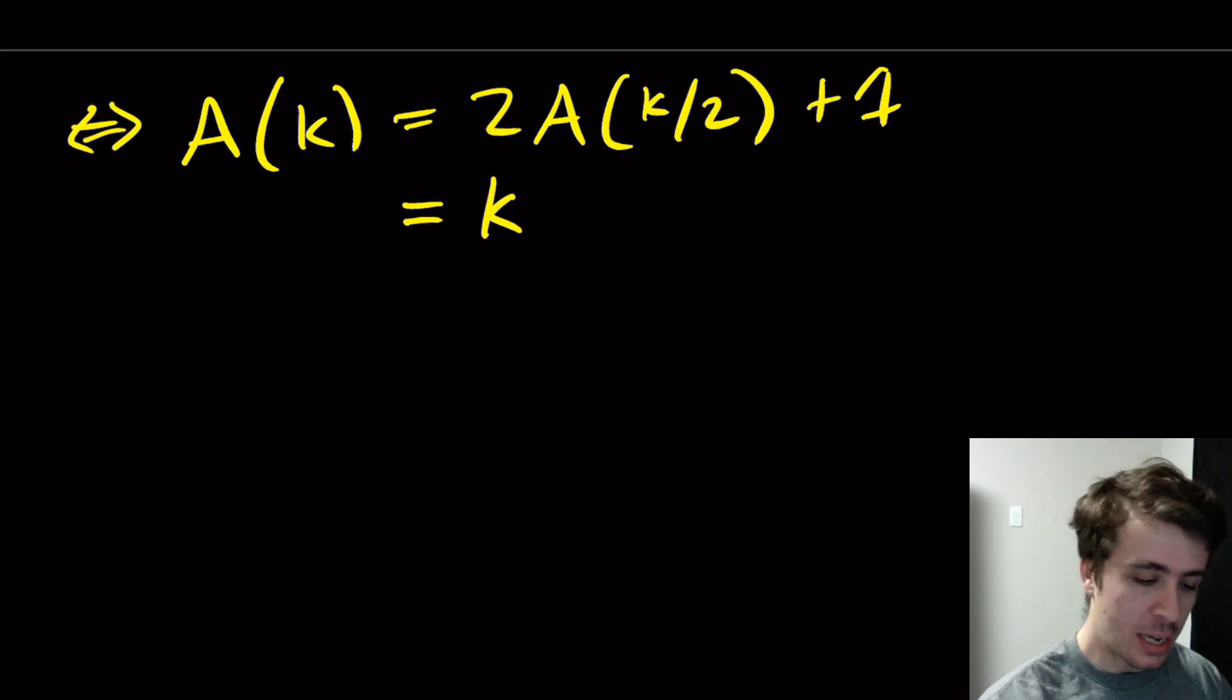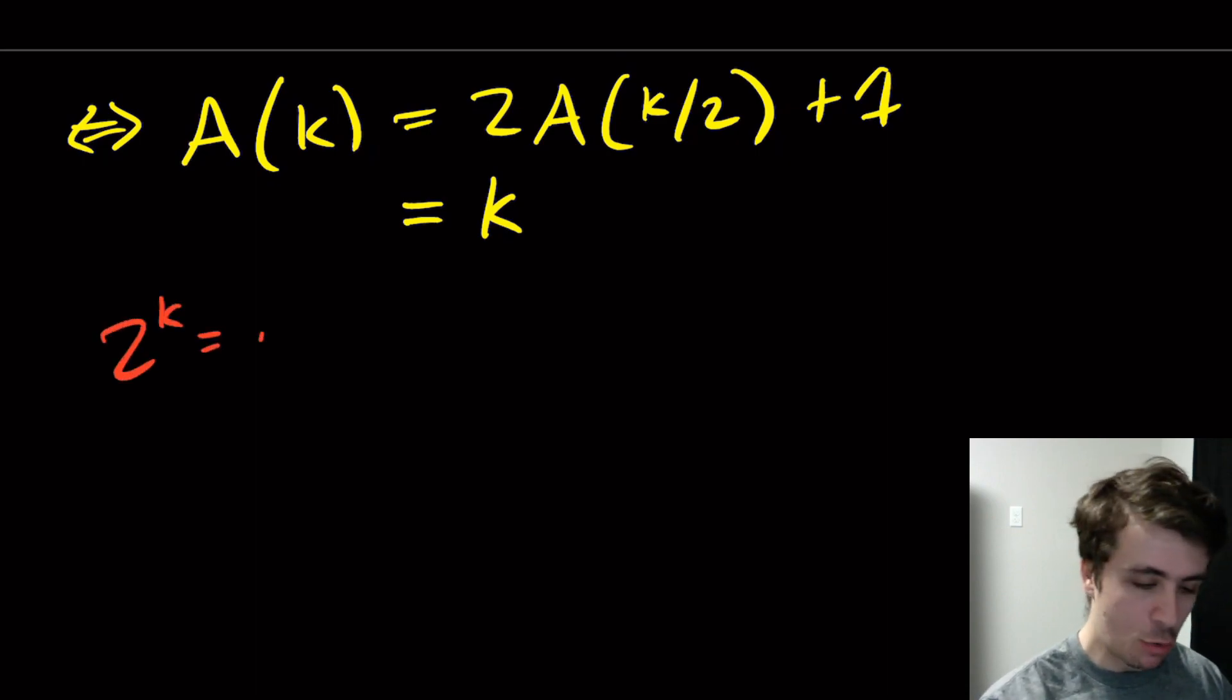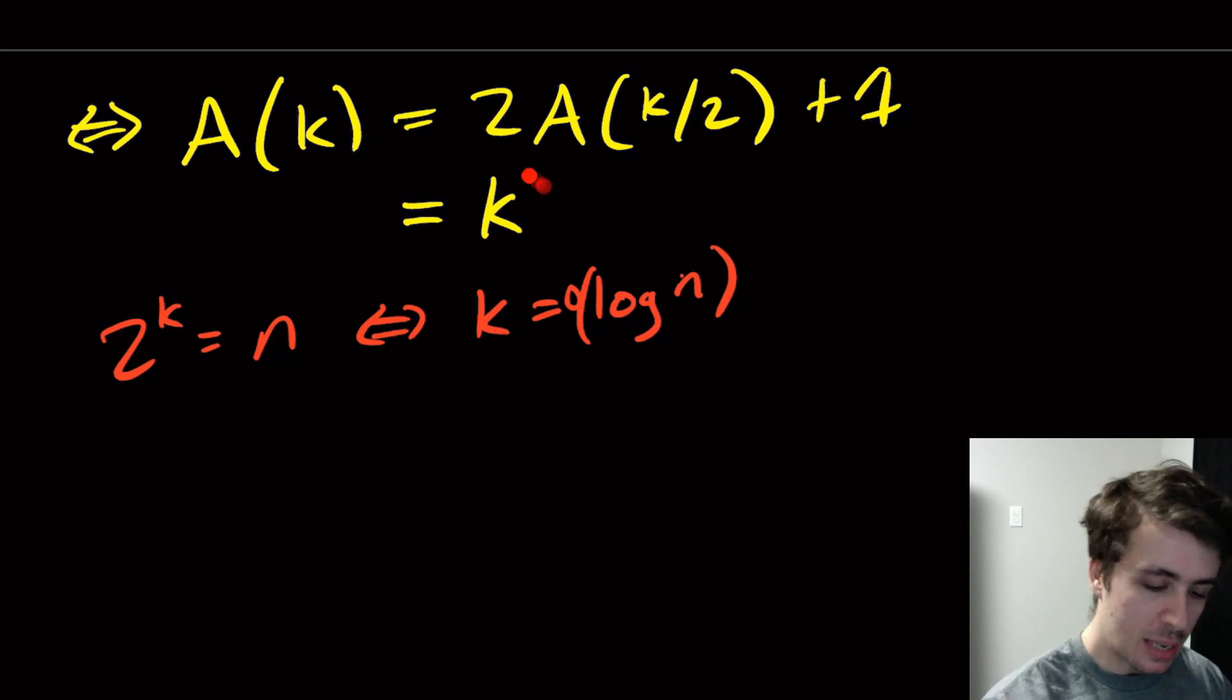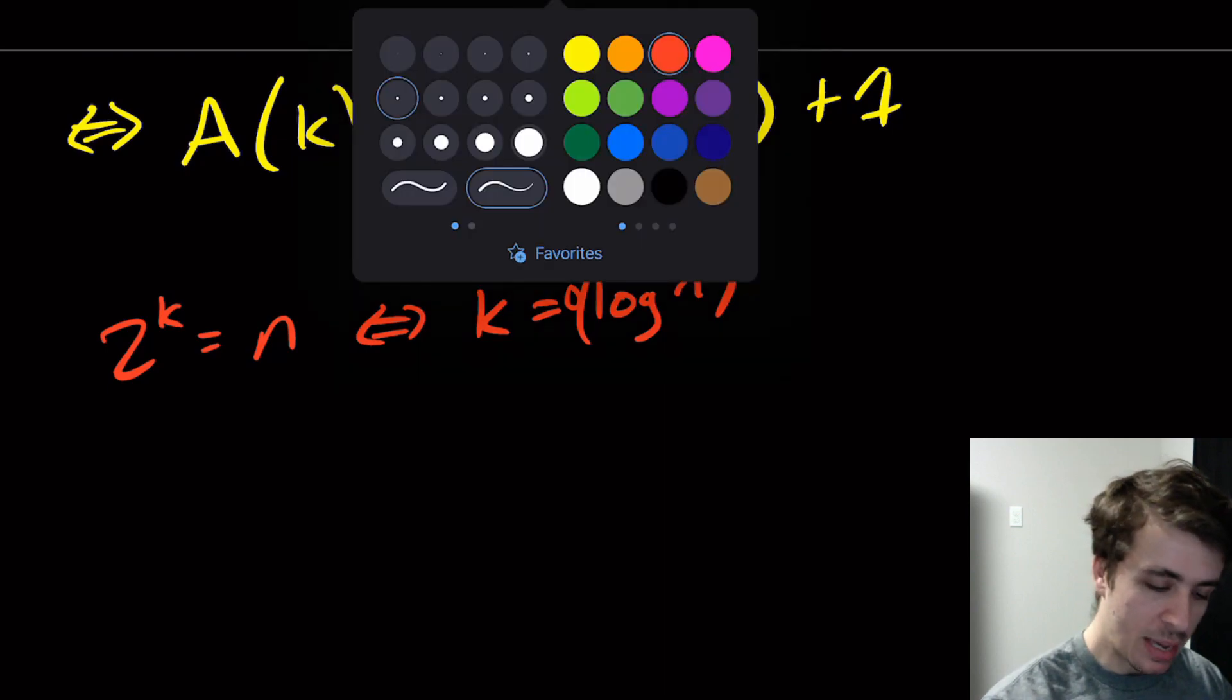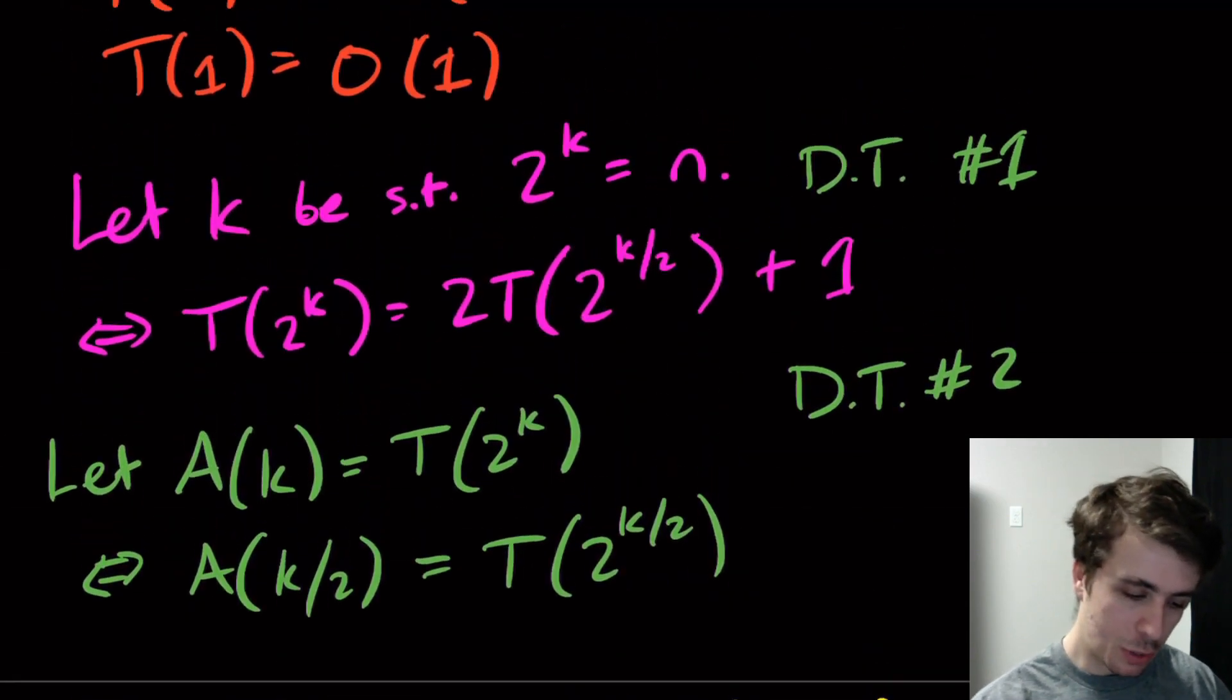Then the total runtime is k. Well then what we have from before is that 2^k = n. What is the actual runtime here? This is simple, we can simplify this to be k being big O(log n), of log n. So the runtime of the algorithm was k, and k is equal to log n. So what we get immediately from this is that T(n) is big O(log n).